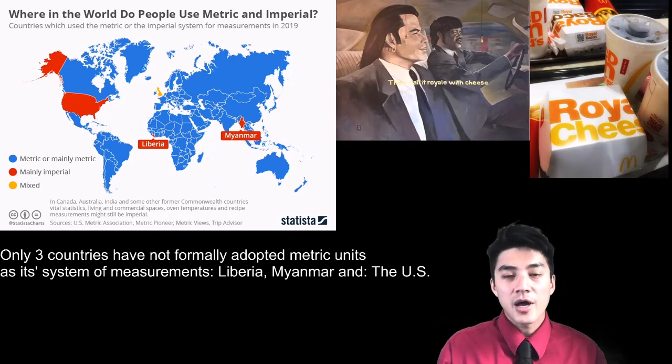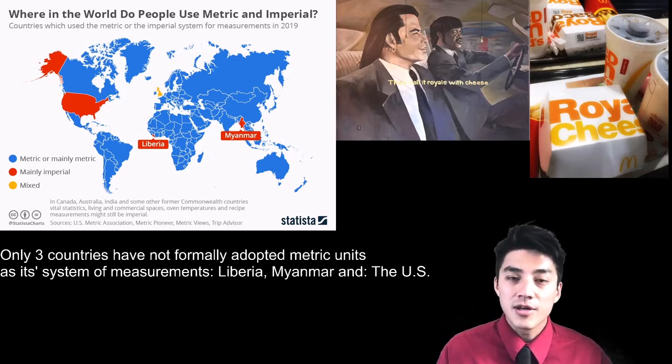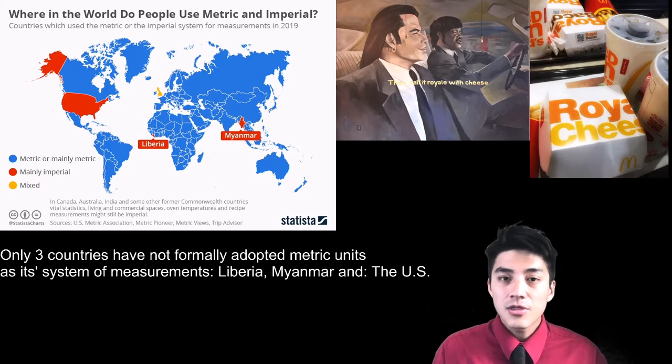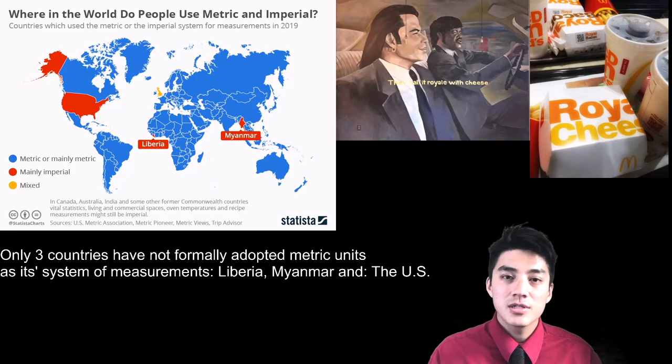If you're looking for a quarter pounder with cheese, you could try looking in Liberia, Myanmar, and the United States. These are the only three countries in the world who have not yet formally adopted the metric units as its system of measurements.